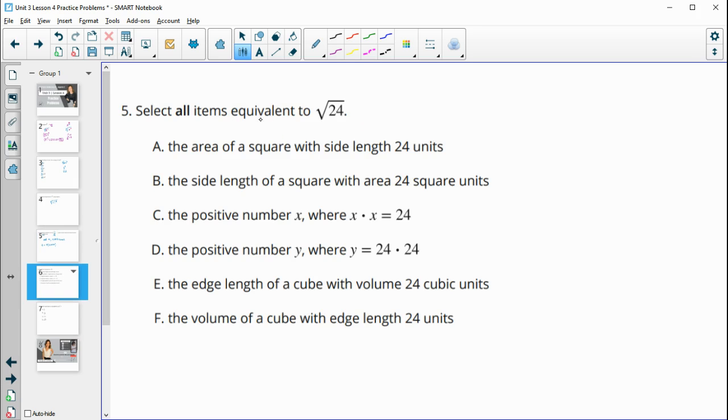Number five, select all items equivalent to the square root of 24. So the area of a square with side lengths of 24. That would not be true because that would be doing 24 times 24. So the area would be 24 squared, not the square root of 24.